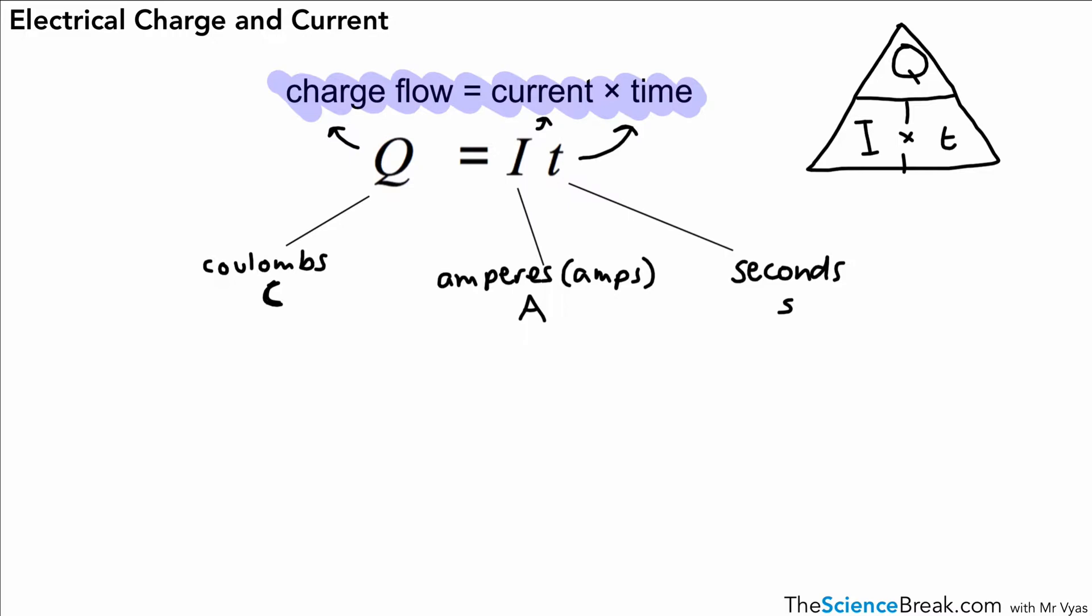But this is an equation that you need to know and remember. So we can apply it to a very simple example just to get us an idea of how we might use this. So our first example here is question number one. We've got a current of 0.5 amps that flows for 12 seconds through a wire. And the question is asking us to calculate the charge that flows.